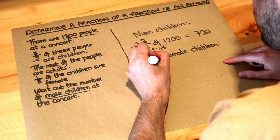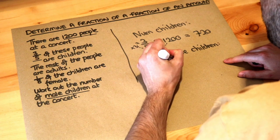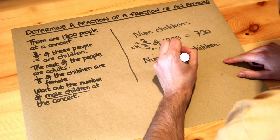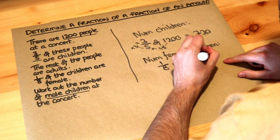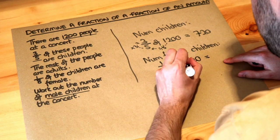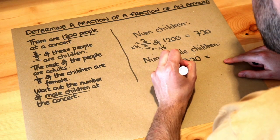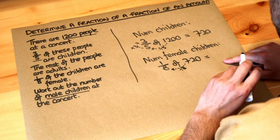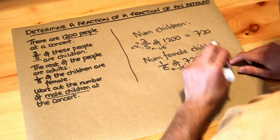So that's an eighth of the children so an eighth of 720, there's 720 children and to do that we divide the 720 by the eight and just times by one which won't have an effect. 720 divided by eight is 90.